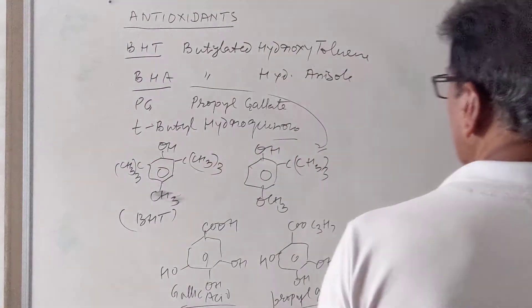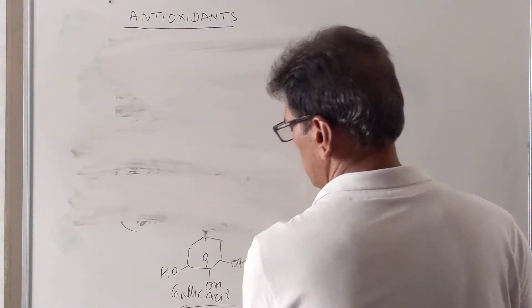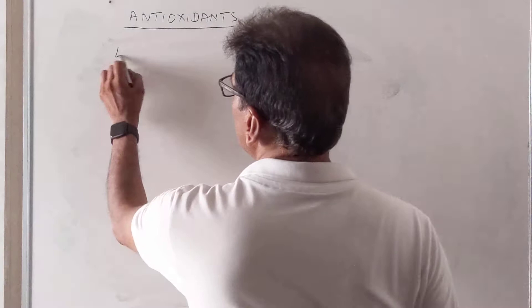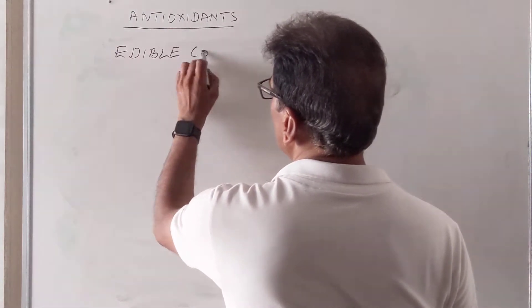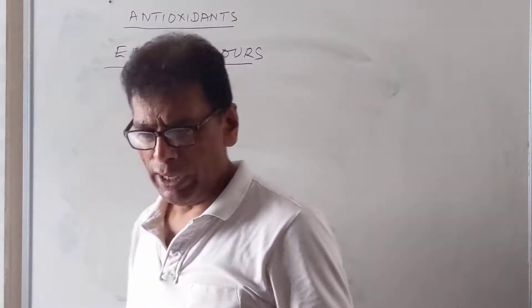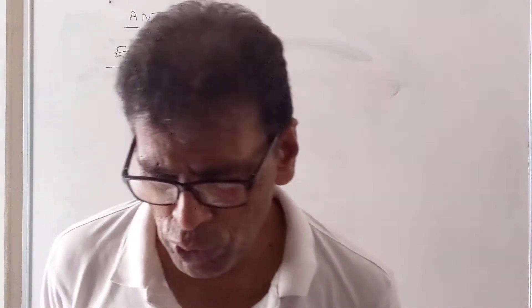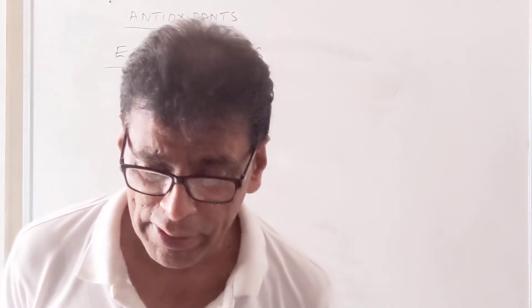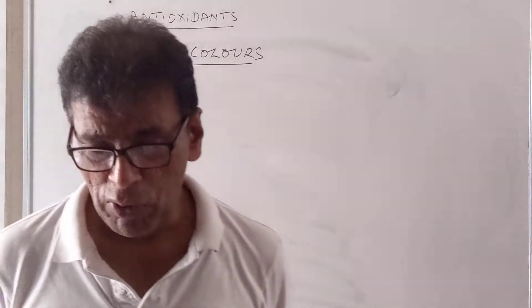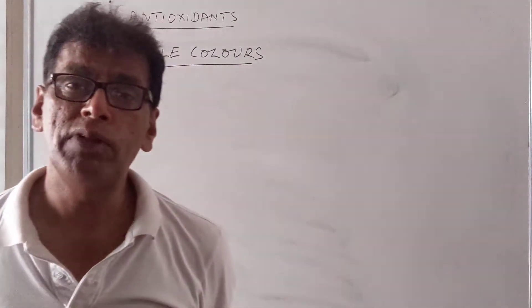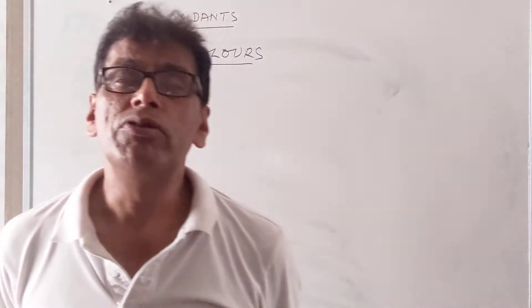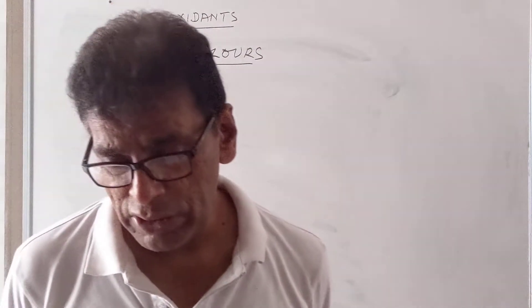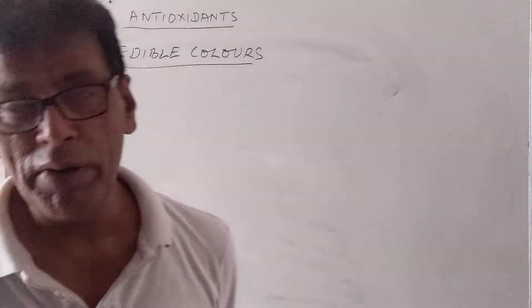Our next topic is edible colors. Edible colors are chemical substances used for imparting color to food and to improve its appearance and complement a definite flavor. These are synthetic compounds or sometimes derived from natural sources, used to give color, improve texture, and improve food quality.